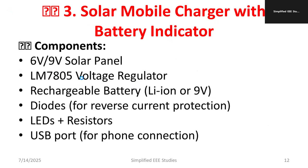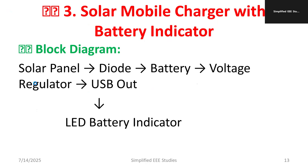Components include a 6-volt solar panel available from eBay or local vendors, an LM7805 voltage regulator, a rechargeable lithium-ion battery (9V also works), diodes to prevent reverse current flow, LEDs, resistors, and a USB port. The block diagram is simple: solar panel → diode → battery → LM7805 voltage regulator → USB output at 5V, with an LED battery indicator to show charge status.